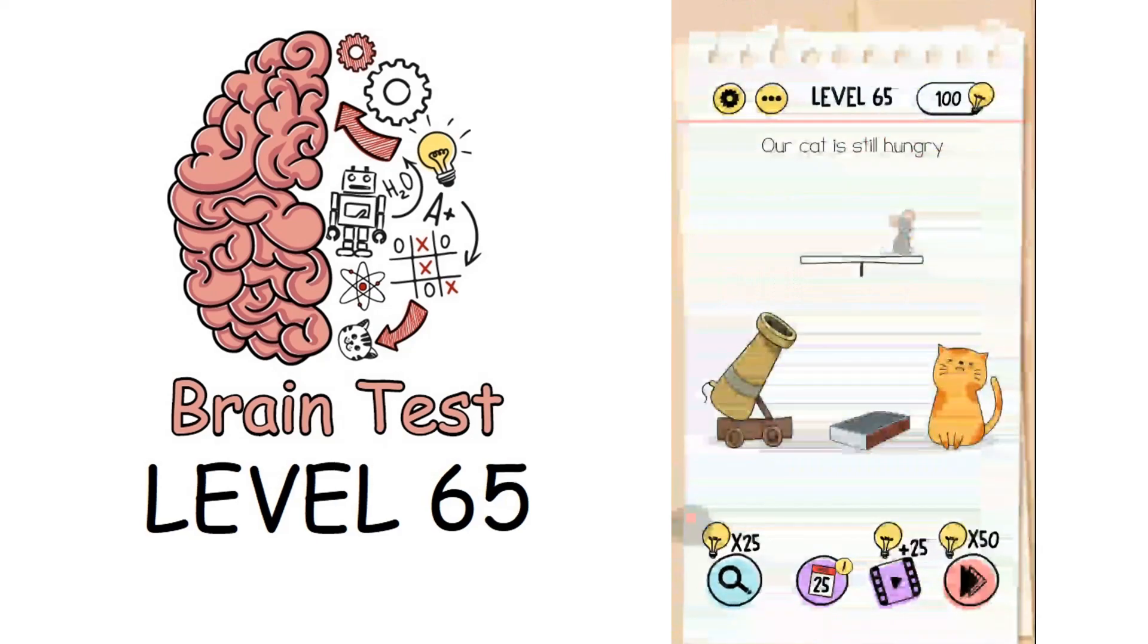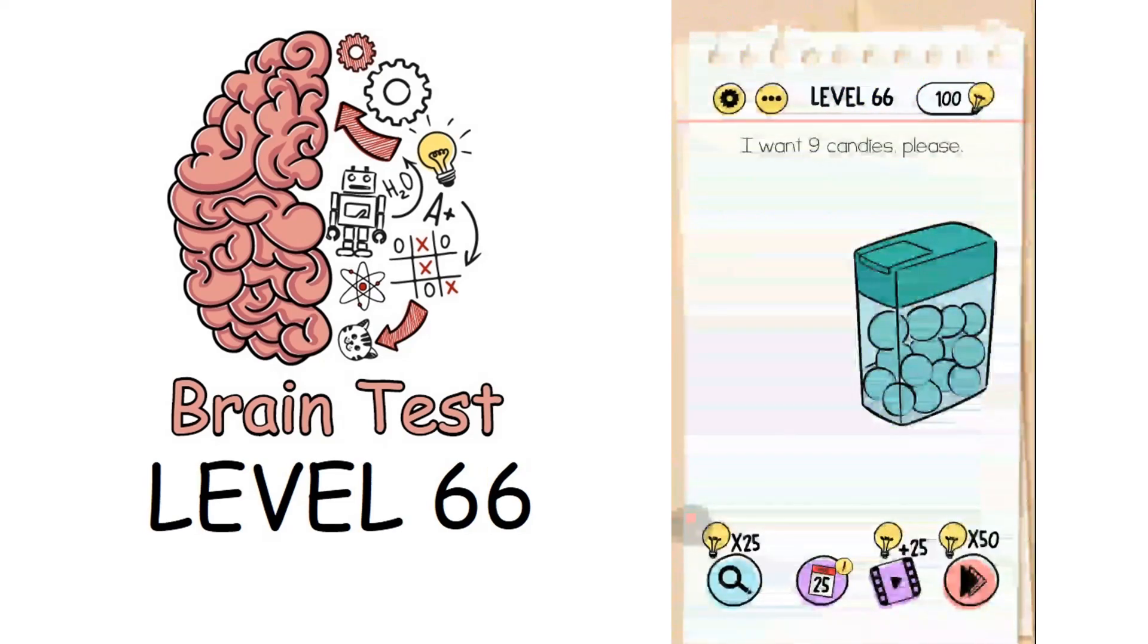Moving on to level 65: our cat is still hungry. How can we feed the cat? Just open the magic box, take this magic, fire it up, and then flame the cannon. There will be a rat which will be dropped and the cat will eat the rat.